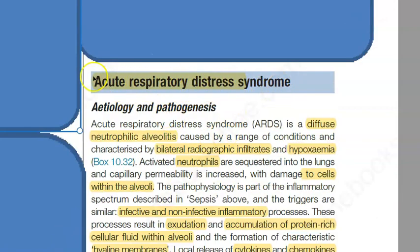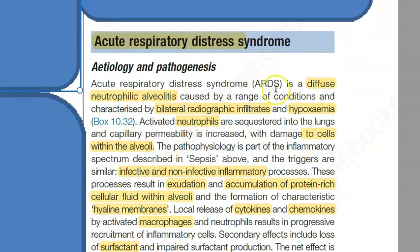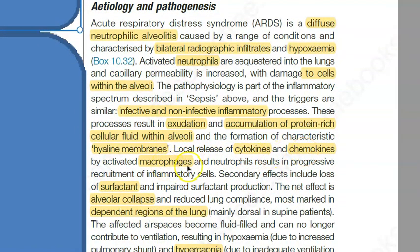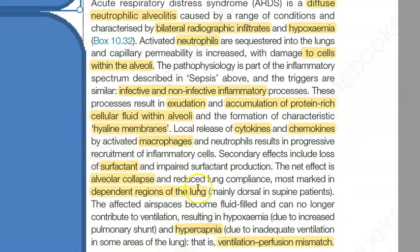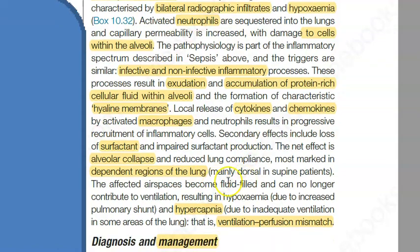In summary, ARDS — acute respiratory distress syndrome — is 'acute,' so less than one week. There is respiratory failure and hypoxemia — the person cannot oxygenate adequately. You will see diffuse neutrophilic alveolitis — the alveoli and their cells are damaged. There is protein-rich cellular fluid (exudate) within the alveoli. This can result from infective or non-infective inflammatory processes, with cytokines, chemokines, macrophages, and neutrophils involved. There can also be hyaline membrane formation — similar to neonatal hyaline membrane disease — and surfactant loss or impaired production, leading to alveolar collapse.